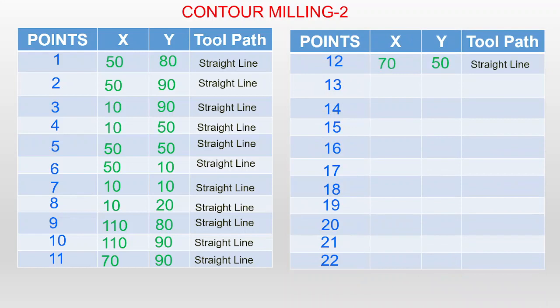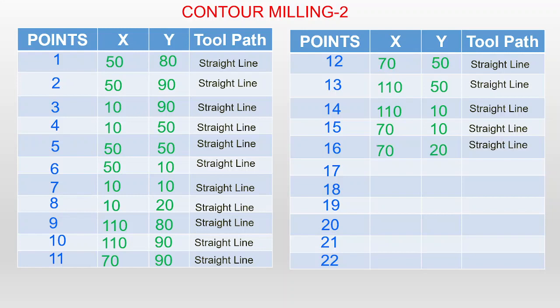Point 12: X = 70, Y = 50. Point 13: X = 110, Y = 50. Point 14: X = 110, Y = 10. Point 15: X = 70 mm, Y = 10 mm. Point 16: X = 70 mm, Y = 20 mm. Point 17: X = 130, Y = 90, straight line. Point 18: X = 150, Y = 90. From point 18 to point 19 there is a curve, and the tool path moves in a clockwise curvature.